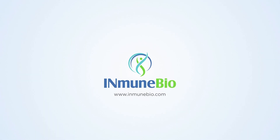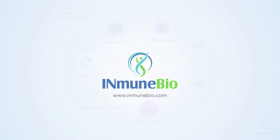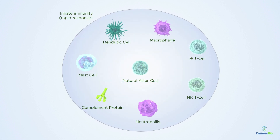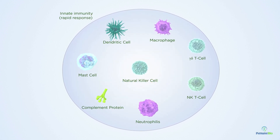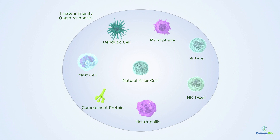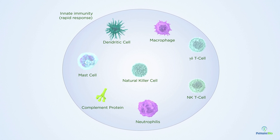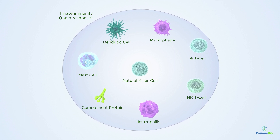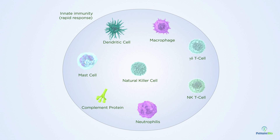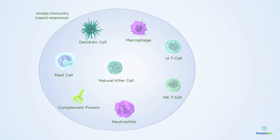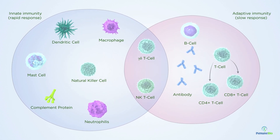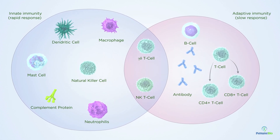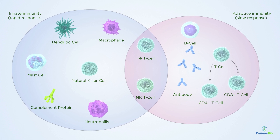Every day our innate immune response protects us from cancer and infectious diseases. It's essential for our existence and is so fundamental to life that we share much of it with primitive animals such as sponges and earthworms. Adaptive immunity evolved more recently, but to be initiated it still needs the innate immune response.